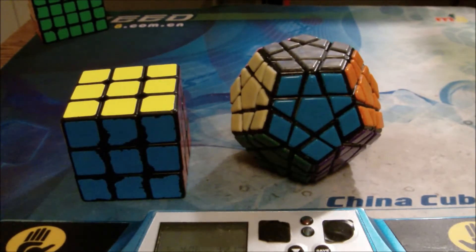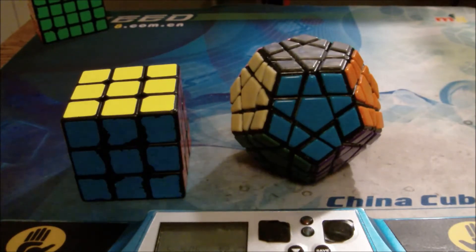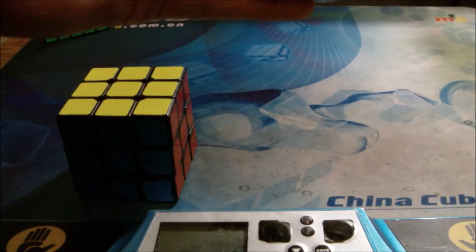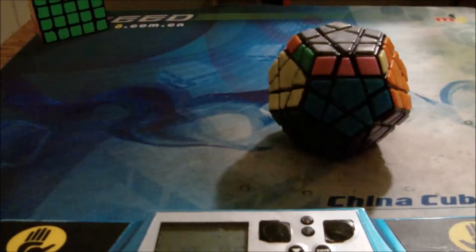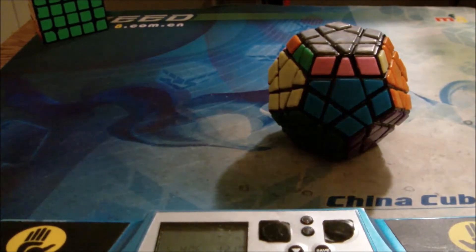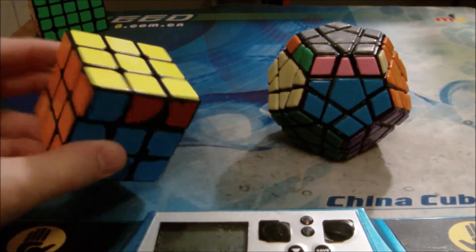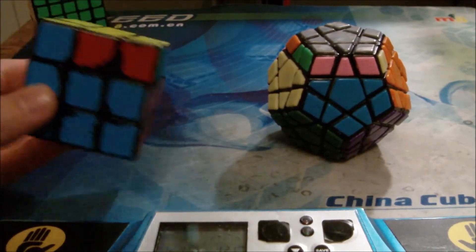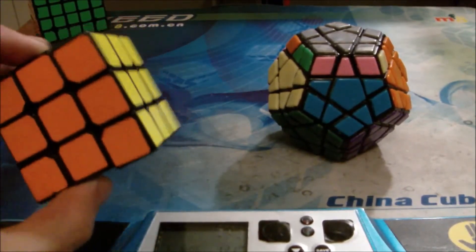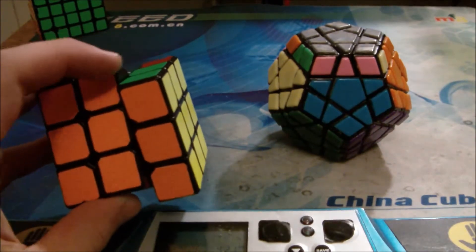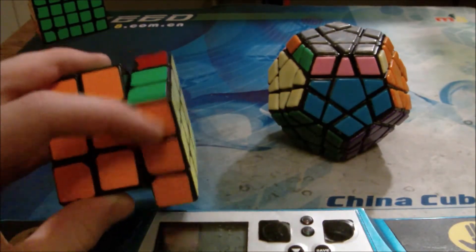So the first case is a J-perm. So this is a J-perm on a 3x3, obviously. It has this bar here, and it's kind of a block too.